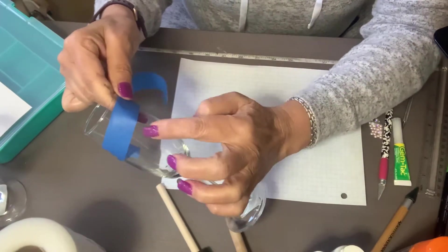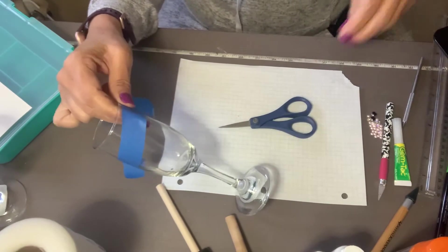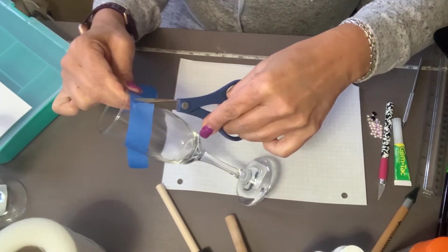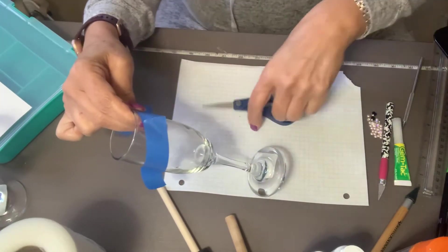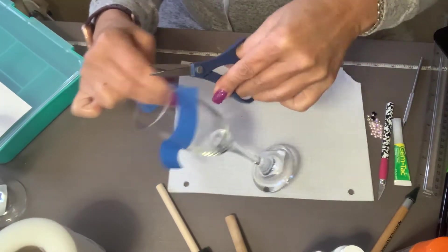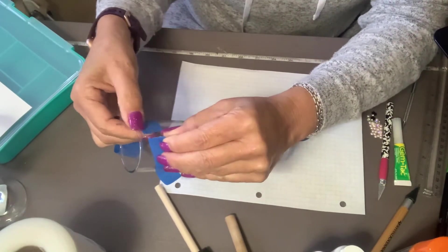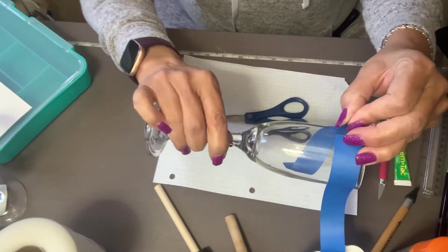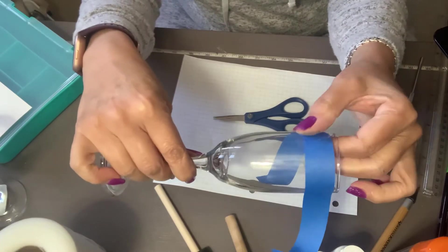Now if you look here, it made like a bubble. So the only thing that you're going to do, you're going to cut right in the middle, all the way through, and then you're going to tape it overlapping one on top of the other one. Just like that. And there it is.